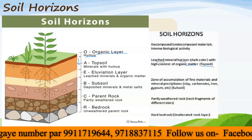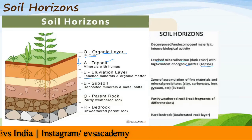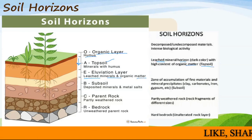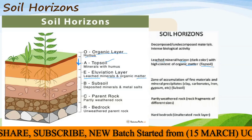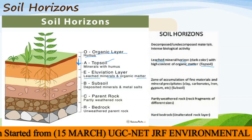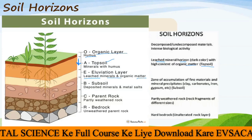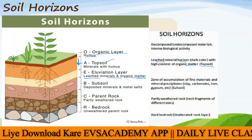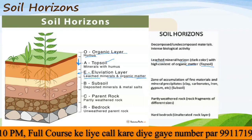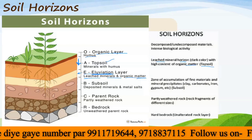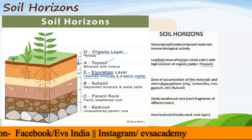The A layer has high organic matter content. Below it is the eluvial layer — the E layer — where leached minerals and organic matter accumulate. Leaching means materials moving downward: organic and inorganic material from the topsoil leaches down and accumulates in this E layer. The term 'eluvial' means accumulation of fine minerals and mineral precipitates like clay, carbonate, iron, and gypsum.